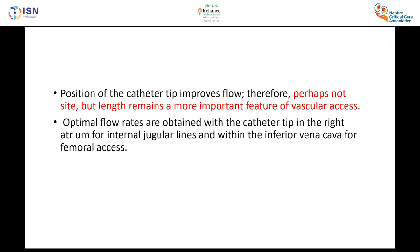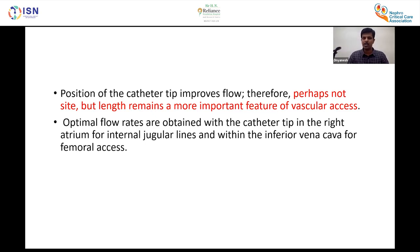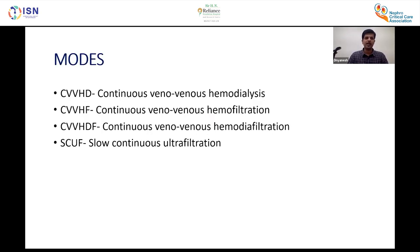Position of the catheter tip is more important than the access site itself. Optimal flows are better obtained when the catheter tip lies in the mid-atrium for the internal jugular vein, and in the inferior vena cava for femoral access. These are the different modes used for CRRT or renal replacement therapy.